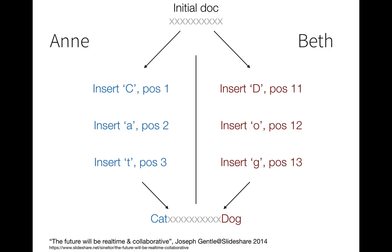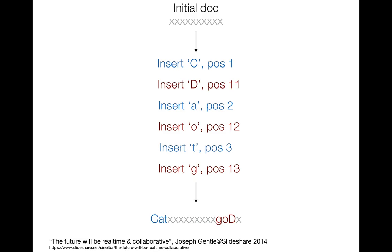However, if these individual inserts come interleaved, we might end up with something else. The C gets inserted, and if you try to insert the D at position 11, the underlying document has now changed, so the D won't go where you expected. Even this extremely simple example of two people typing three letters can end up quite problematic. The even simpler assumption — writing the whole document to the database on every update — means one person's changes would completely overwrite the other's.